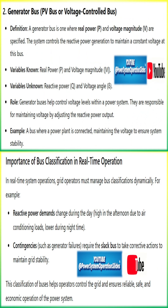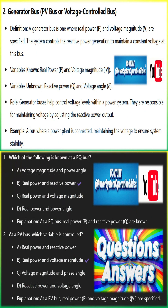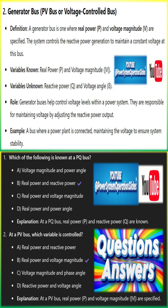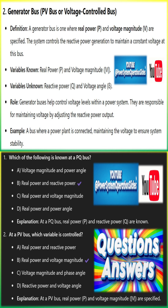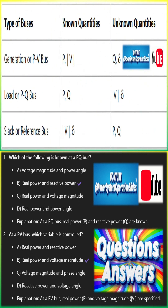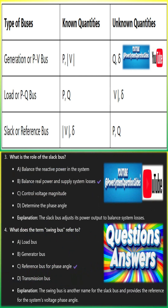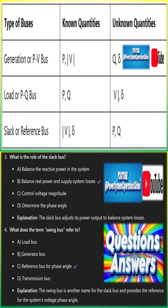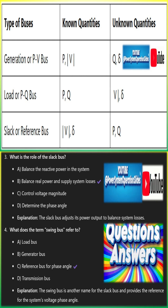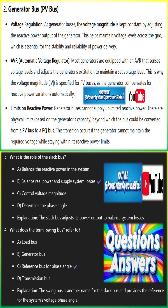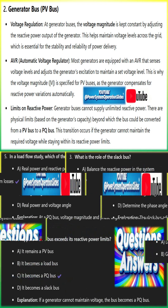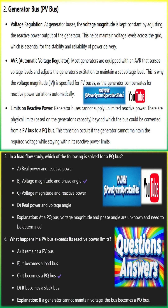Load bus, or PQ bus: the load bus is a bus where real power P and reactive power Q are specified, but the voltage magnitude and phase angle need to be determined. Variables known: real power P and reactive power Q. Variables unknown: voltage magnitude V and voltage angle. The majority of the buses in a power system are load buses because loads consume both active and reactive power. In load flow analysis, this is where consumer demand is modeled.